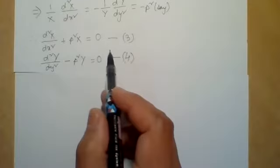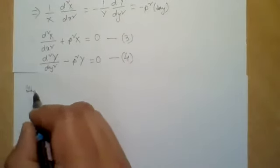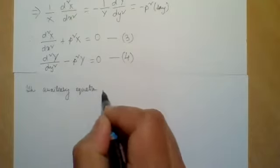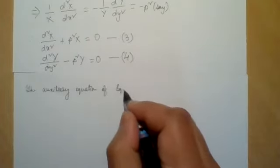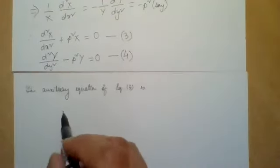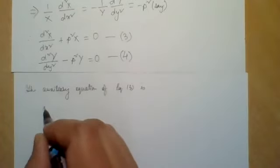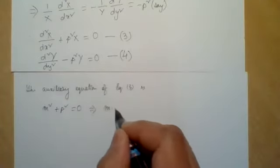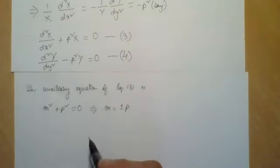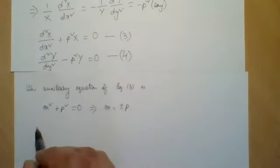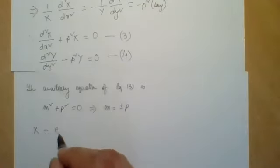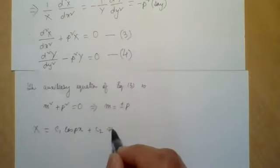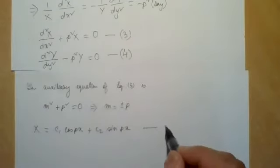First, let us solve equation number 3. The auxiliary equation of equation 3 is obtained by replacing the second-order derivative with m²: m² + p² = 0, which implies m = ±p. So the solution is X = c₁cos(px) + c₂sin(px). Let us call this equation number 5.